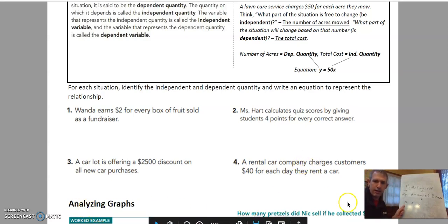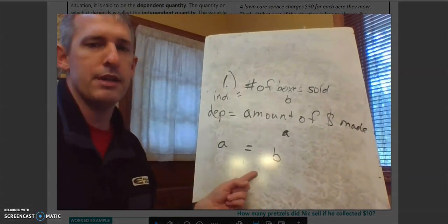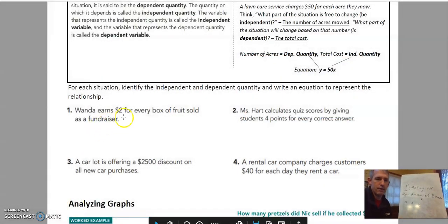So these are not equal to each other. A is not equal to B. So but what is the relationship? Well, go back to the reading here. It says for every box you sell, you get $2. So for every B, every box I sell, I get $2. Meaning, I'm going to multiply two times B to get my A. So two times B gives me my A.